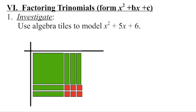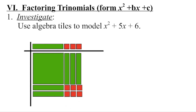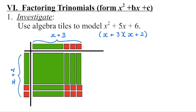We're then going to look and say this polynomial is represented by these pieces here. We've built the rectangle. What is the length of that rectangle? Well, we can see this is a length of x and then one, two, three — so we have x plus three. This has a width of x plus one, two, which means that the factors of this polynomial are x plus three times x plus two.